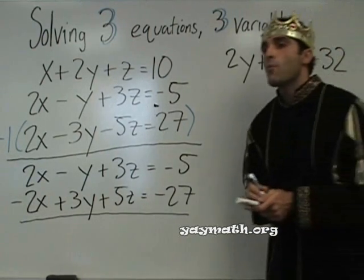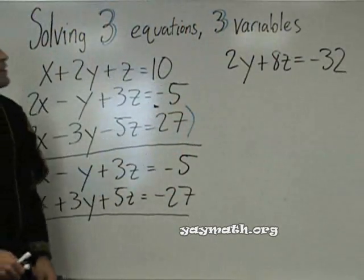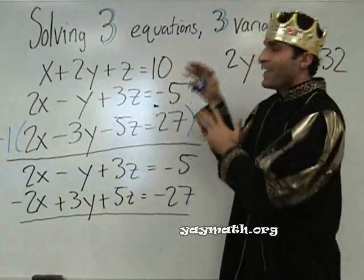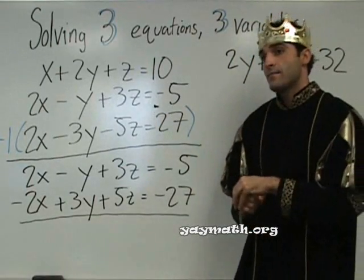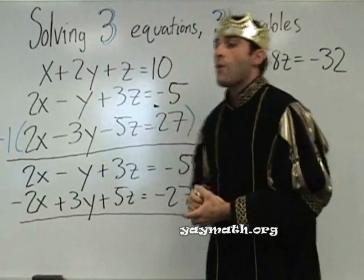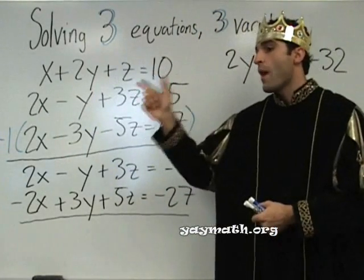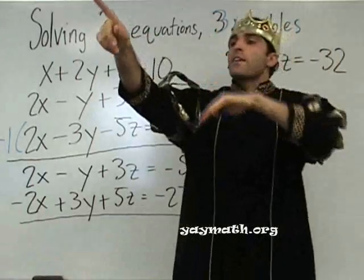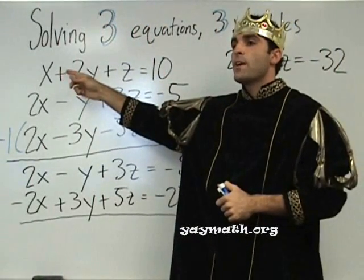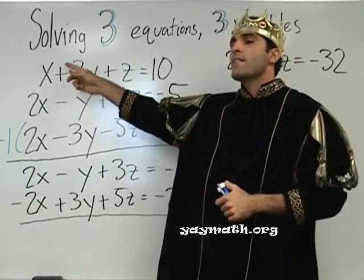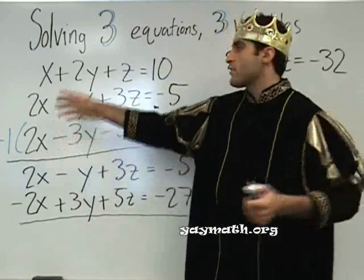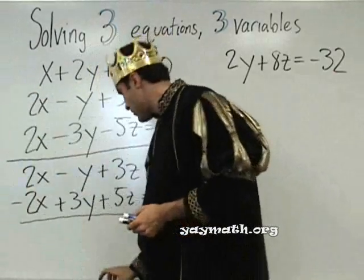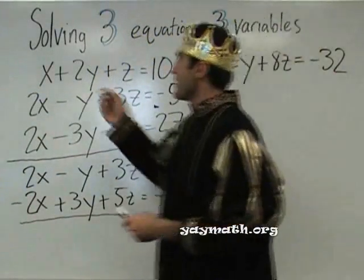Okay, good. So we have one equation now with two variables. Now we need another equation with y and z in it. So we go back to the originals and pick another two to eliminate x again. Any questions about that? That's all it is — you're eliminating x again to get another equation with y and z. Multiply the top by negative 2 and combine it with the second one. If we multiply the top by negative 2, can we combine it with the third one? Let's do top — the first and second. We're multiplying this one by negative 2.